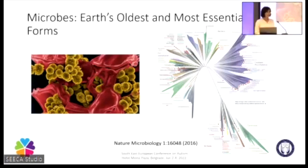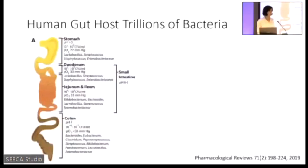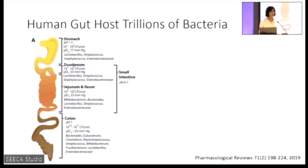These communities that live in and on us are called microbiomes, and we have many of them — a skin microbiome, a breast milk microbiome, and some even advocate for a placenta microbiome. But nowhere do we find so many different species and such a large density of microbes as in the human gut. They change throughout the gut, reaching trillions of bacteria in the colon. These bacteria are not just sitting there — they are actively functioning: involved in maturation of the immune system, helping degrade foods, and synthesizing vitamins we cannot produce ourselves.